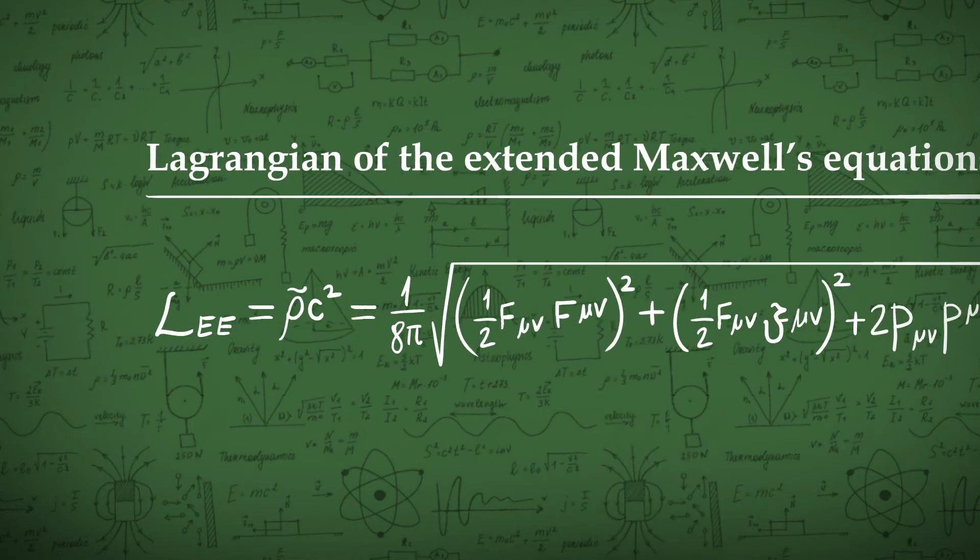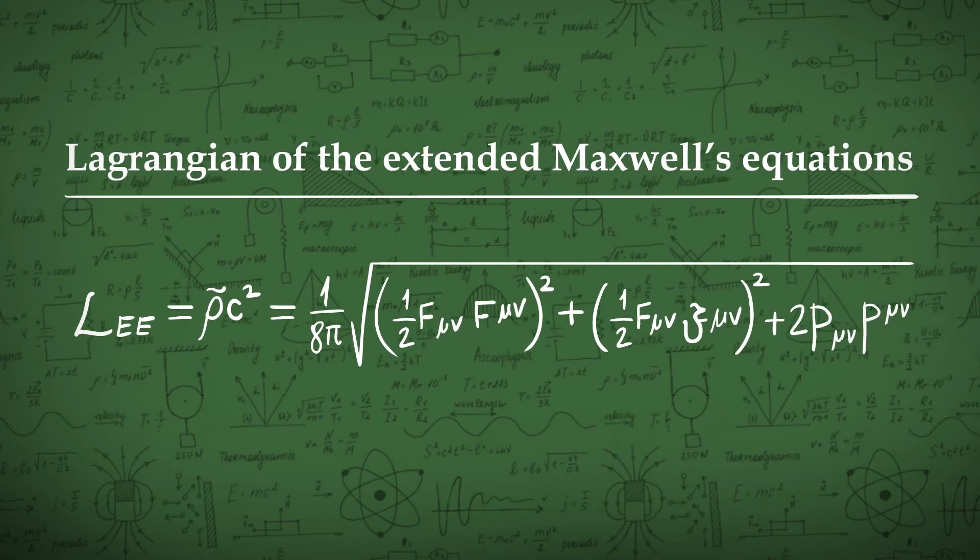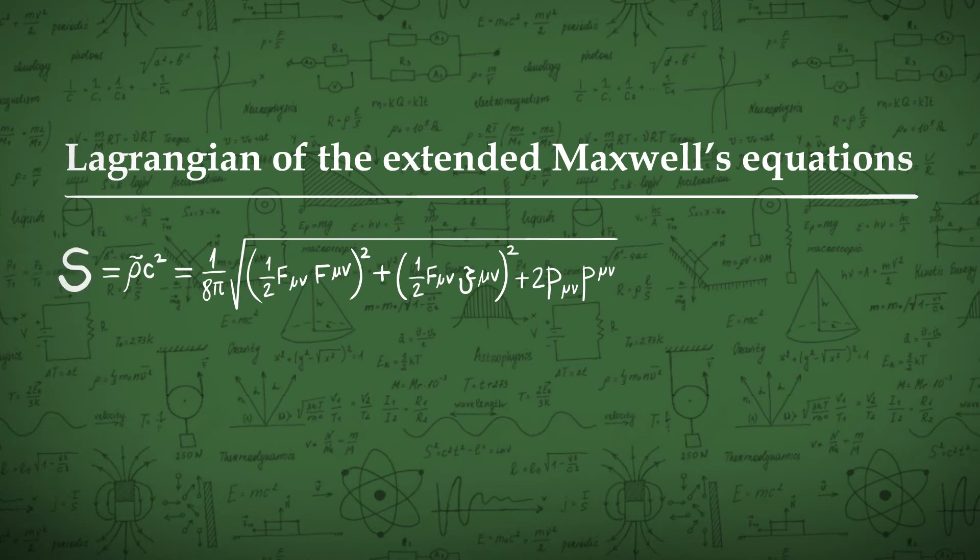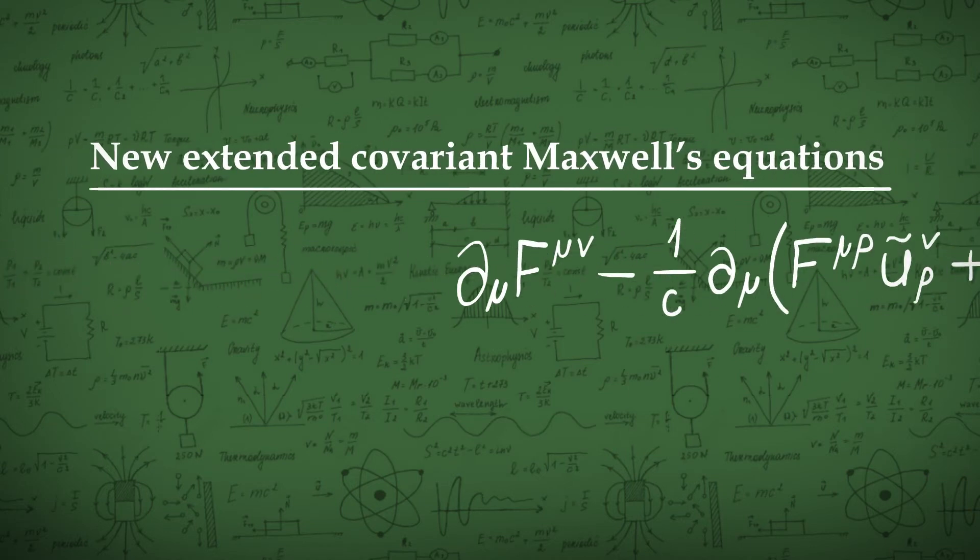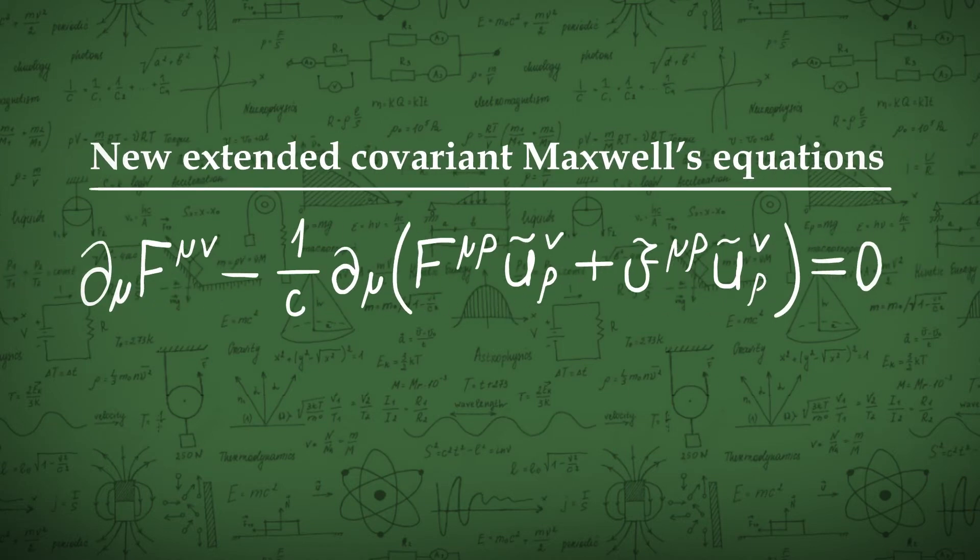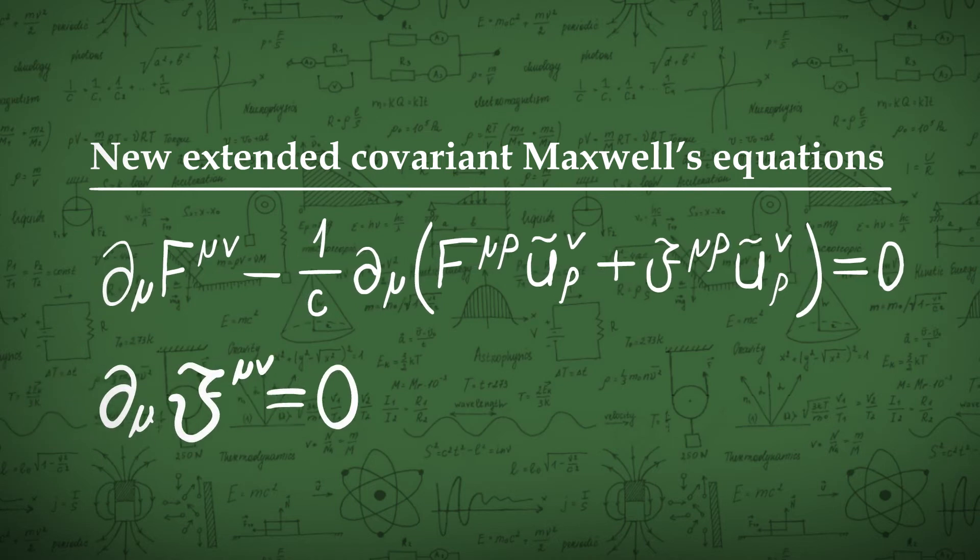The Lagrangian of the extended Maxwell equations is this. The action is this. The extremum of this action gives the new extended covariant Maxwell's equations in conjunction with the dual tensor equations.